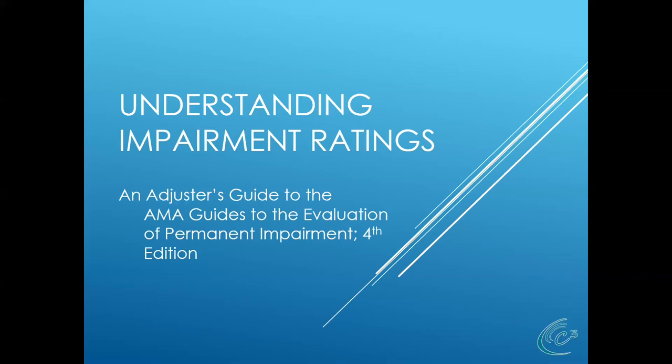This is basically an adjuster's guide to the evaluation of permanent impairment, fourth edition. One of the biggest changes between the old law and the current new law is that we did away with disability ratings and went with impairment ratings. This attempted to objectify certain parameters of the case to establish additional financial issues. There are some points I want to bring out during the course of this talk.